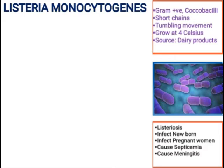This condition of meningitis is more common in newborn babies and pregnant women. Listeria monocytogenes can cause infection in humans and animals. In veterinary microbiology, the disease caused by this bacterium in animals is known as circling disease, also called silage disease, in which animals move in circles.